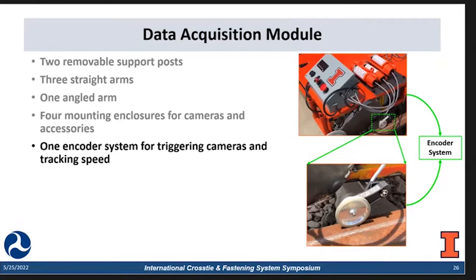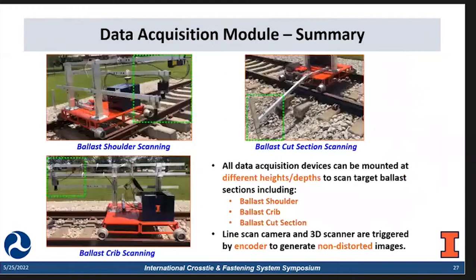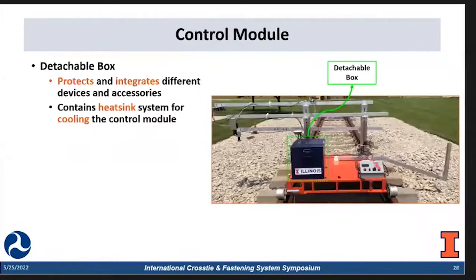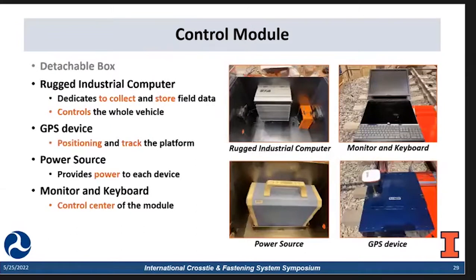As a summary, we have three scanning configurations: we can do shoulder scanning, cut section scanning, and also crib scanning. Next is the control module. The main part is the detachable box which protects and integrates all the devices and contains a heat sink system for cooling. The four major components inside are: the ruggedized industrial computer — which collects and stores field data and controls the whole BSV, acting as the brain of the vehicle — the GPS device, the power source, and a screen with monitor and keyboard for user input.